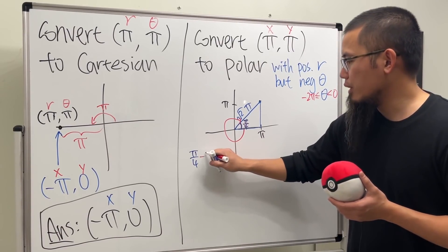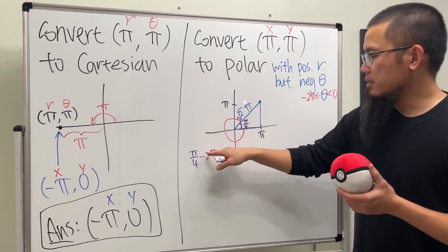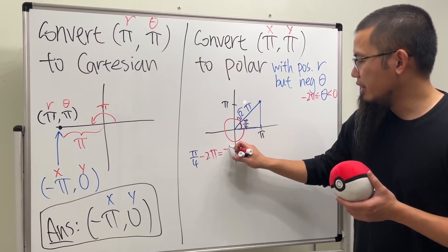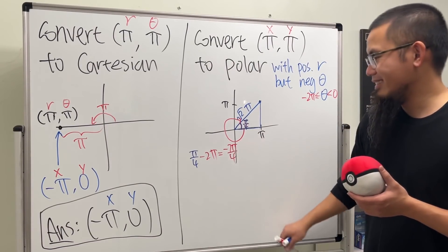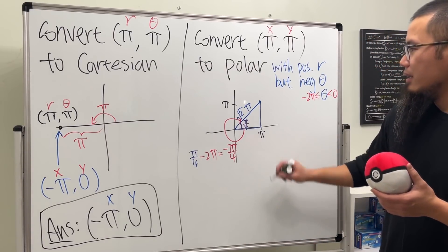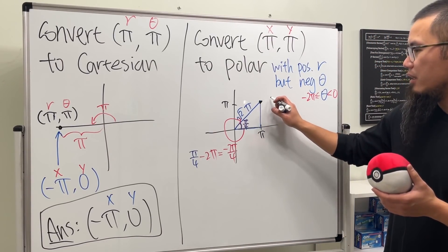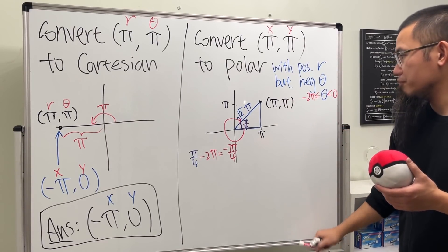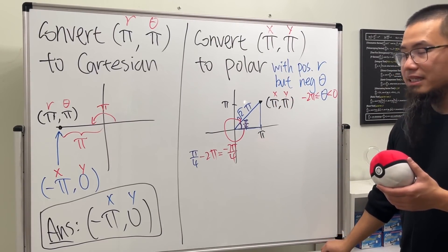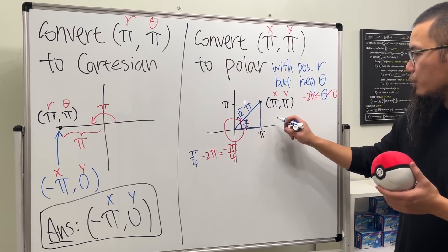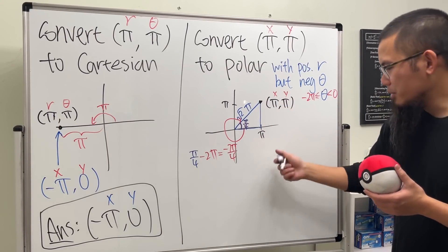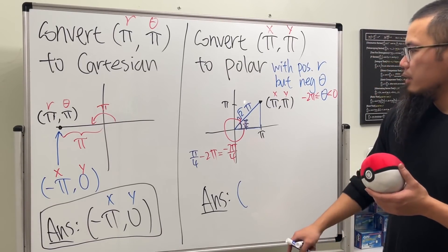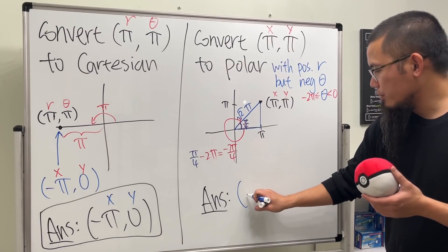And of course, just go ahead and do the fractions on your own. This is the same as -8π/4, which is going to give us all together -7π/4. So this point, as we said earlier, it was (π, π) when we have (x, y), but this is actually the same as what we got over there.